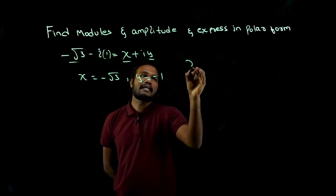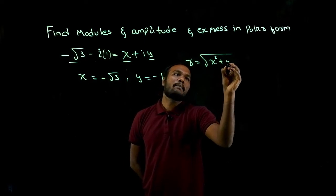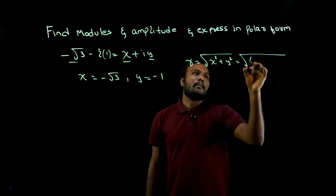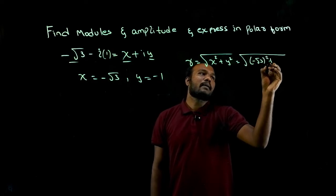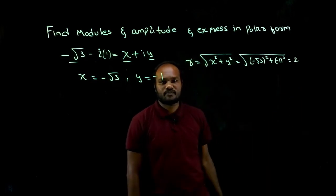Now we have to find r, that is the modulus. Modulus is the square root of x squared plus y squared. That is root of minus root 3 whole squared plus minus 1 whole squared. If you put this in a calculator you will get 2.